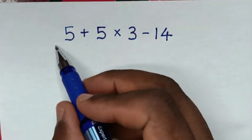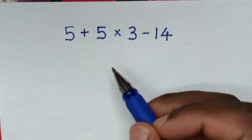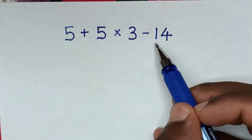Hello, you are welcome to solve this math problem of order of operations. Our problem is 5 plus 5 times 3 minus 14.